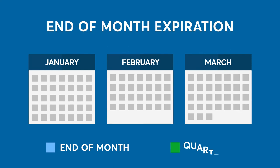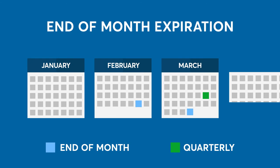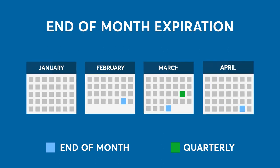Finally, the end-of-the-month options. At any given time, there will be three consecutive end-of-month option expirations available. For example, assume it's January — the three consecutive end-of-month options listed are January, February, and March. When the January end-of-month options expire, the April end-of-month options will be listed.